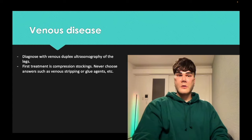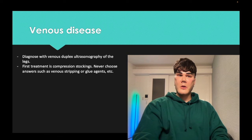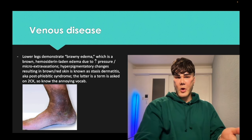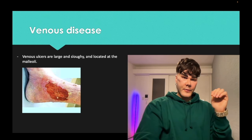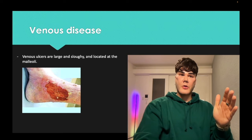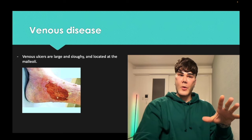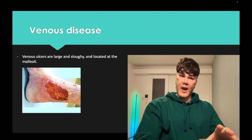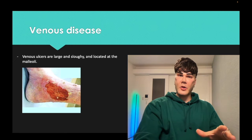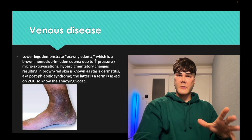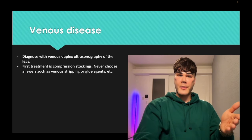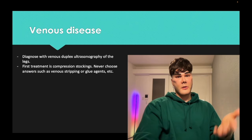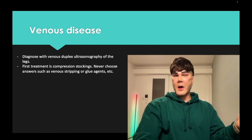Compression stockings is what they want as the next step after ultrasound, 14 out of 15 times. They'll show you a patient with brawny edema, and for the ulcer picture they'll want venous disease as the answer. They won't get into debatable territory about compression stockings with an active ulcer or debridement — they'll show you brawny edema with valvular incompetence on ultrasound and then just want compression stockings. Answers like sclerosing agents, glue agents, or venous stripping are wrong on USMLE.